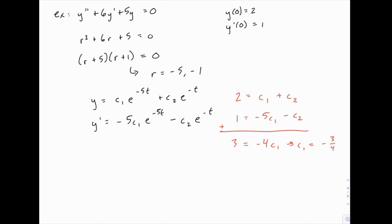And once we know that, we can plug that into either one of those two equations. For instance, if we plug it into the first one, we get 2 equals negative 3 fourths plus c2, from which we can solve and get c2 equals 11 fourths.